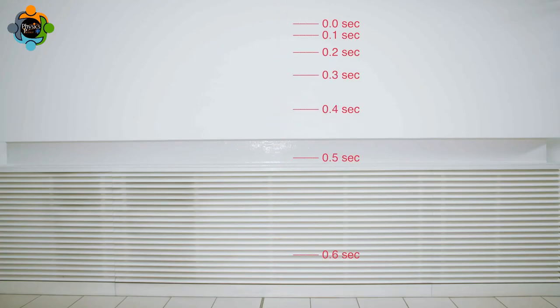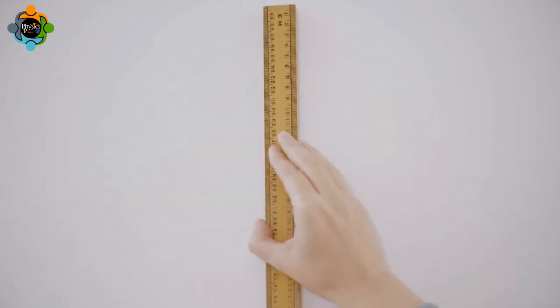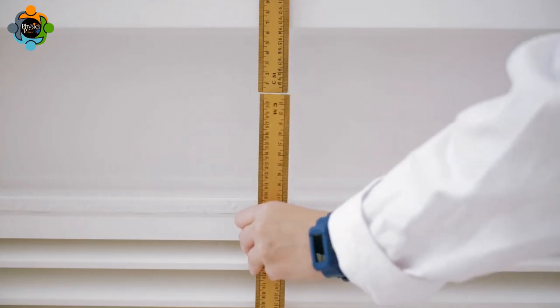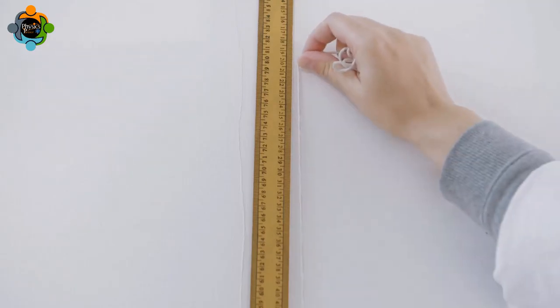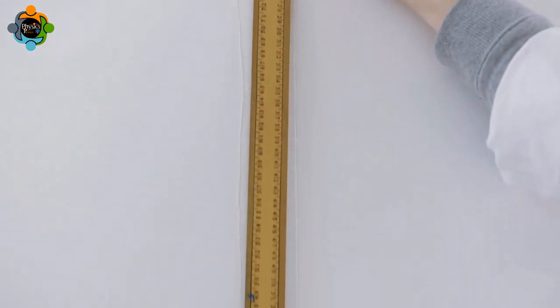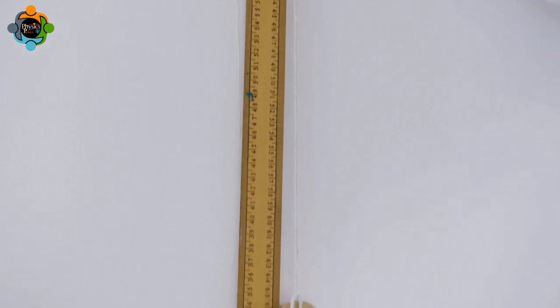A meter rule is fixed to a wall at the height of two meters. A plumb line is used to ensure the meter rule is aligned vertically.